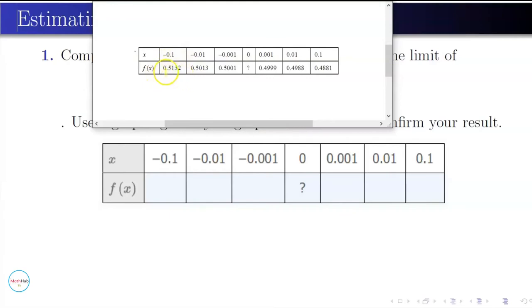From this example here, we see that if x approaches 0, either from the left or from the right of 0, the values of f of x would go closer and closer to 0.5.